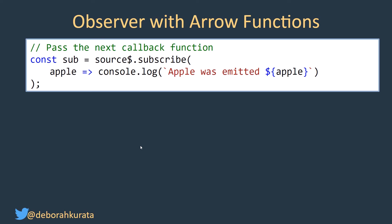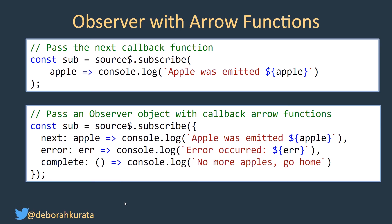A couple of years ago, RxJS was changed such that subscribe will only take one argument. So it can either be that next function, or it can be an object with our observer — next, error, and complete. Now you don't have to have all three of them. Most Angular applications will only use next and error frequently. You won't see complete because there's nothing special that needs to be done on complete for that particular case.